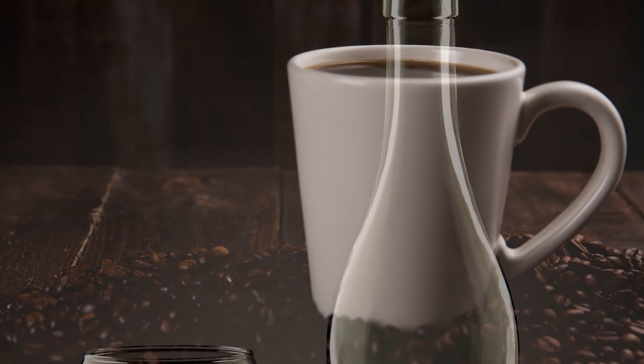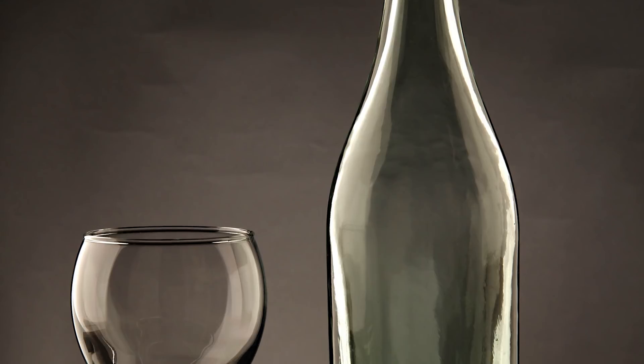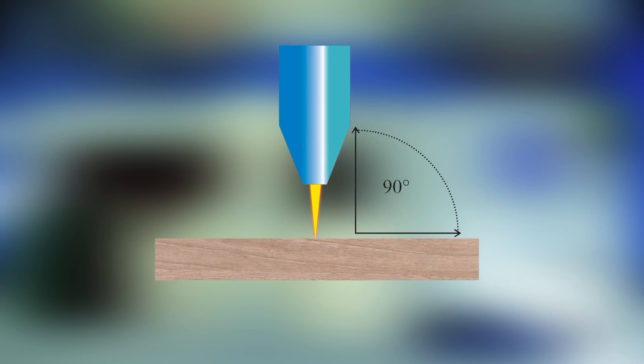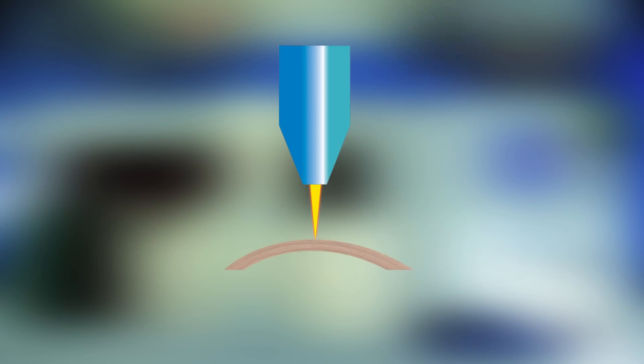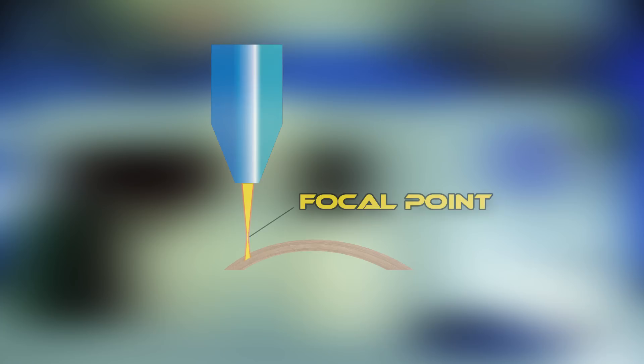Now this works fine for flat surfaces, but what if we want to cut or engrave cylindrical objects such as mugs and bottles? The laser beam needs to hit the surface in a 90 degree angle in its focal point. A cylinder does not have a flat surface, at least not on the sides. That's where the rotary tool comes in.